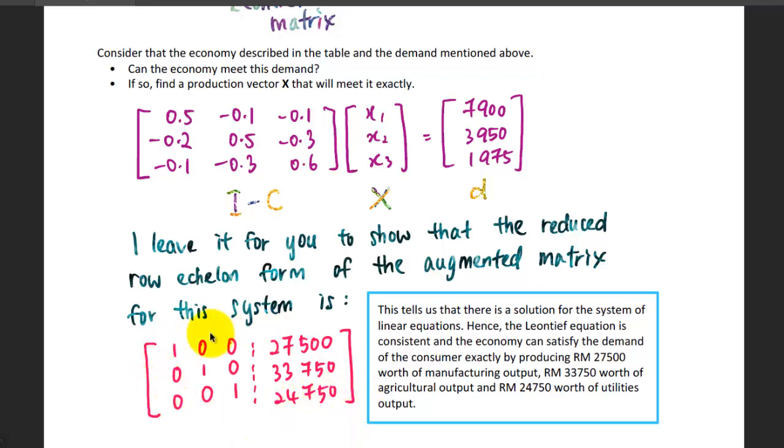So what does this tell us? This tells us that there is a solution for the system of linear equations because we have one value for each of the corresponding unknown. Hence we say that the Leontief equation is consistent. Remember, consistent below consistent we have two possible outcomes: one solution and infinitely many solutions. So in this case, it's one solution and it is consistent.